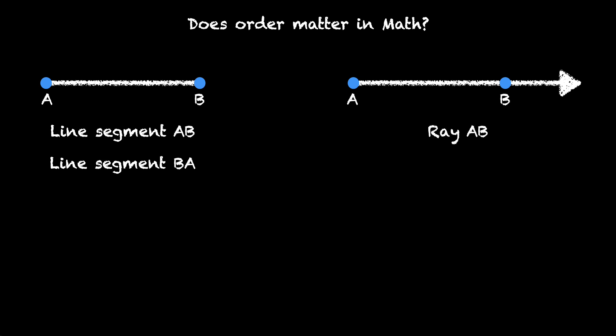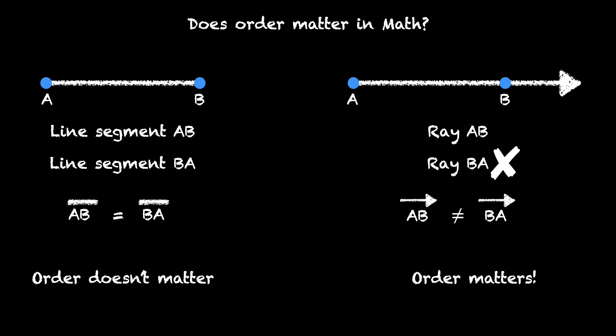In the second case, we have ray AB. Can we say we have ray BA? Saying that ray BA exists means we start from B and move in the direction of A. That is not the case here. We only have ray AB. So line segment AB and line segment BA are the same, but ray AB and ray BA are not the same. Sometimes order does not matter, but in some cases, order does matter.